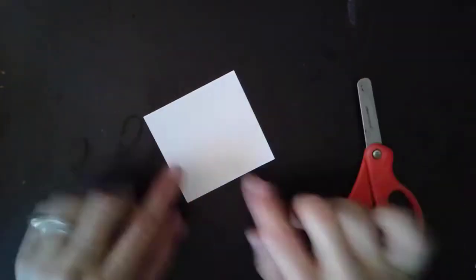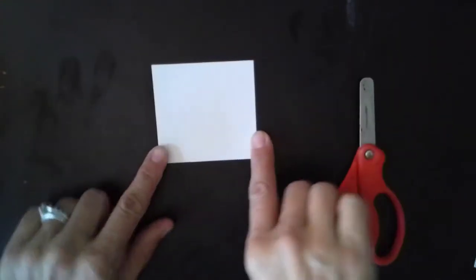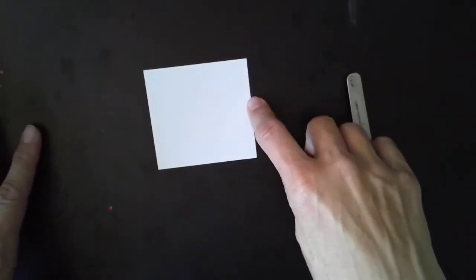Hi friends! I want to show you how to take this square and cut it into a circle. We're going to be making eyes, and we don't want square eyes, we want circle eyes. So I'm going to show you how to take this square and make it into a circle.